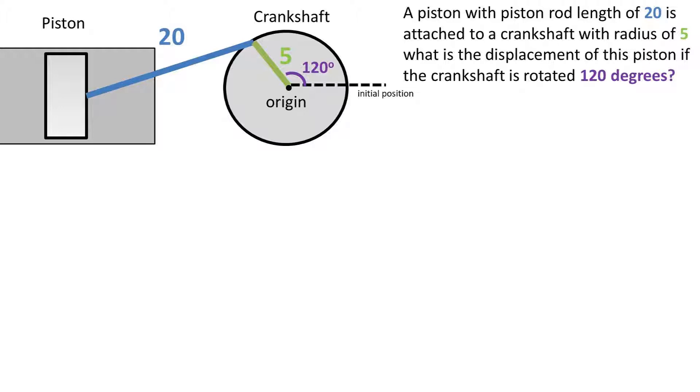So how do we go about solving this problem? Well, we have to think in terms of triangles. The piston rod makes a blue triangle with hypotenuse of 20 units, which is the piston rod length.